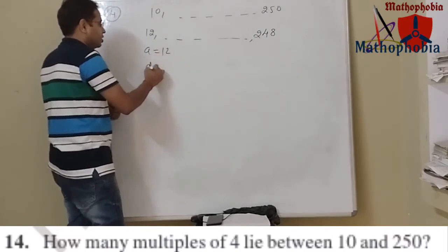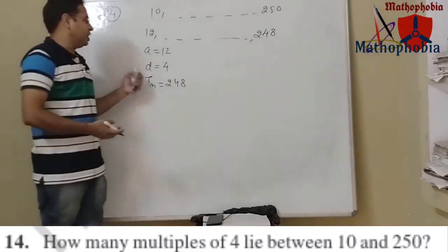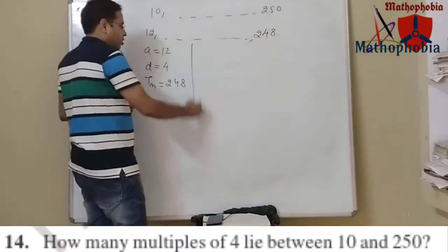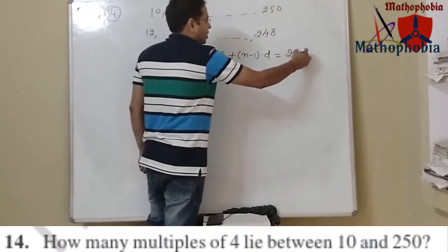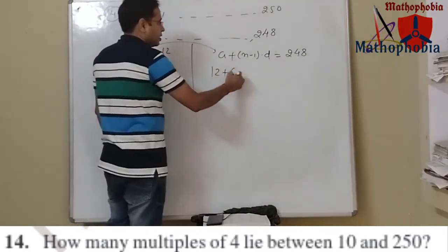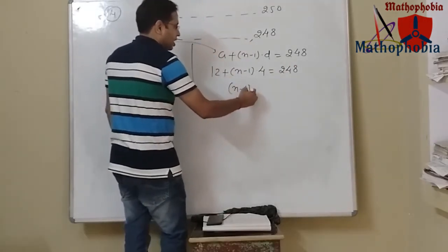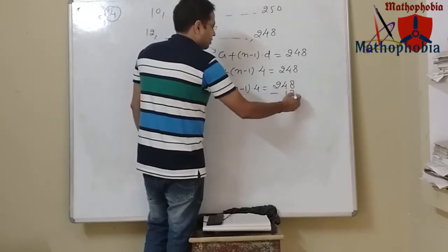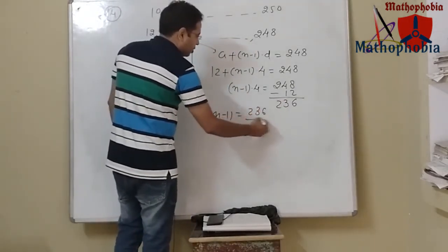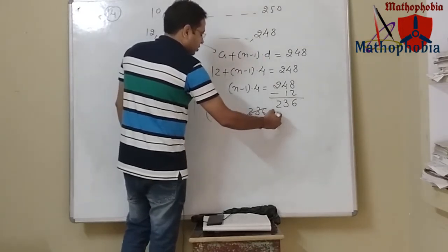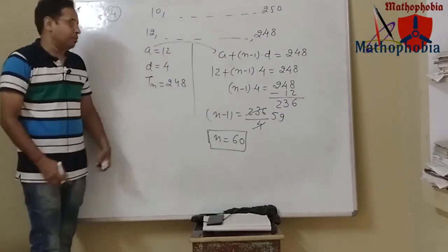We have the first term a = 12, common difference d = 4, and nth term = 248. Applying the formula: 12 + (n-1)×4 = 248. So (n-1)×4 = 236, giving n - 1 = 59, therefore n = 60. There are 60 terms between 10 and 250 which are divisible by 4.